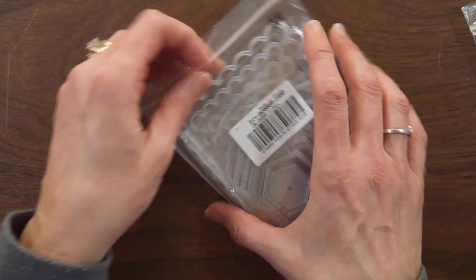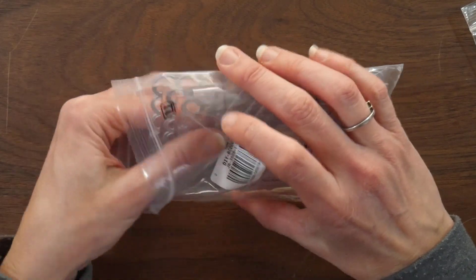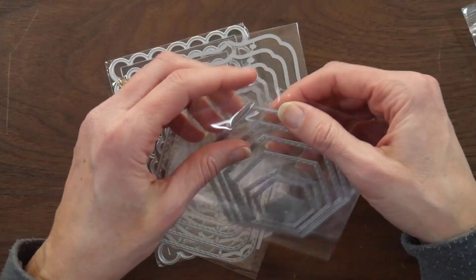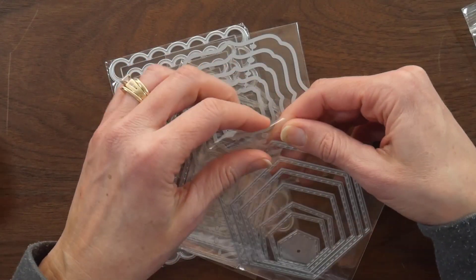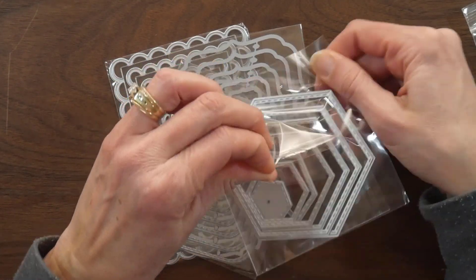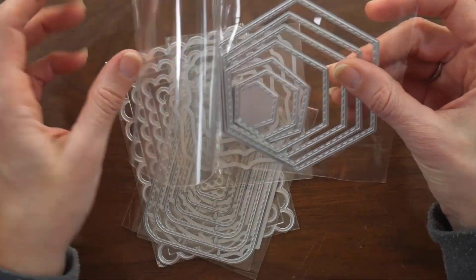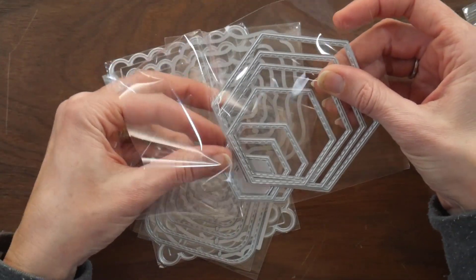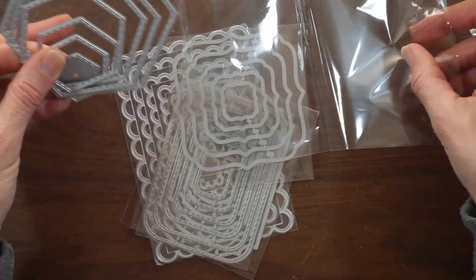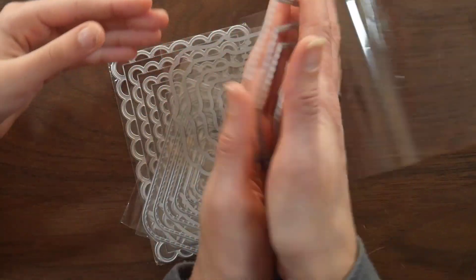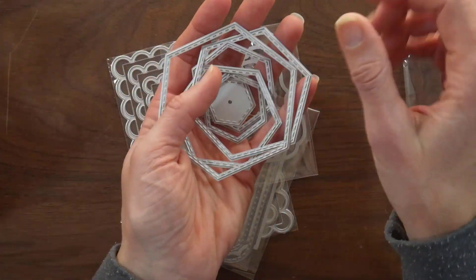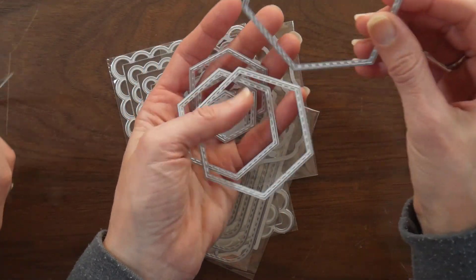And then the other set that I got is some nested frames. Do you know what shape this is? Let's see if I can open them up without dropping them. But it's stitched. Yep, stitched hexagon. I have a helper today.